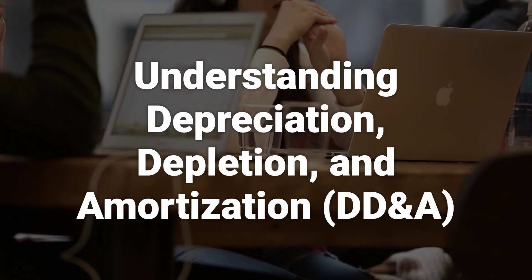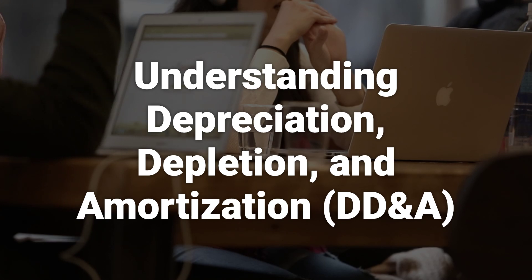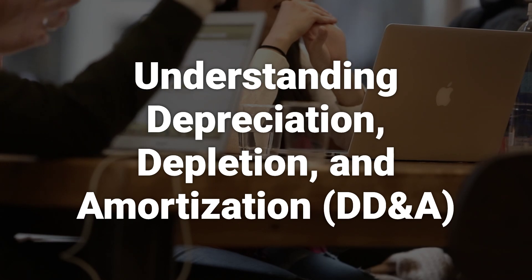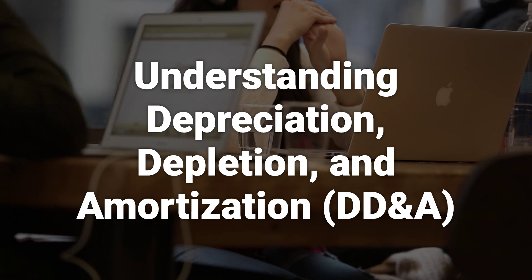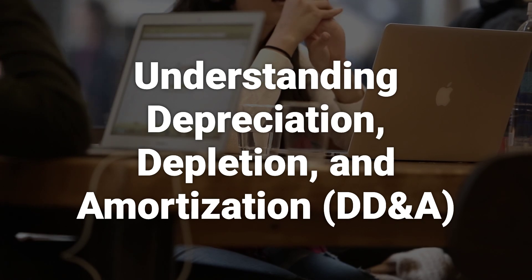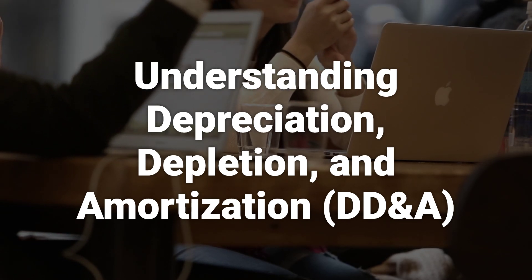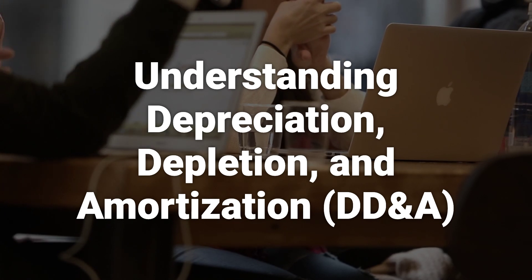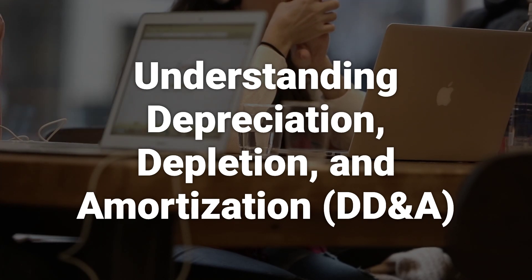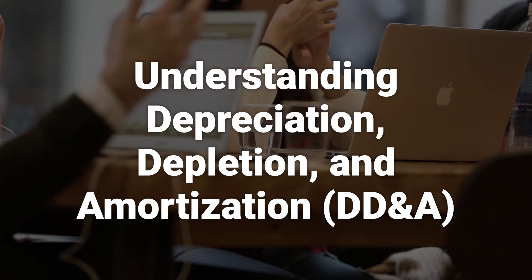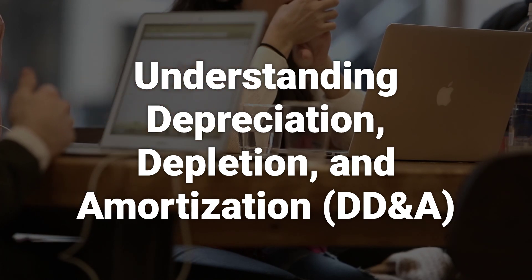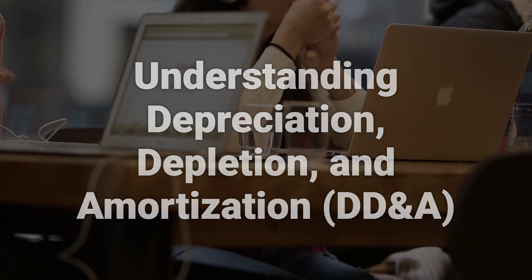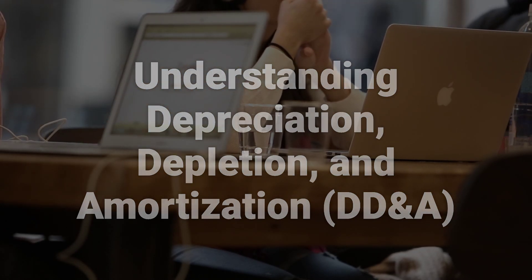Accrual accounting permits companies to recognize capital expenses in periods that reflect the use of the related capital asset. This lets firms match expenses to the revenues they helped produce. DD&A is a common operating expense item for energy companies, and analysts and investors in the energy sector should be aware of this expense and how it relates to cash flow and capital expenditure.